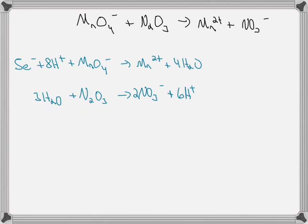And we've got no charge, and minus two and six plus, so that's four plus. So we're going to need four electrons on this side in order to have no charge on both sides.